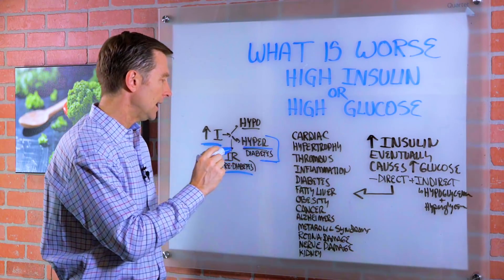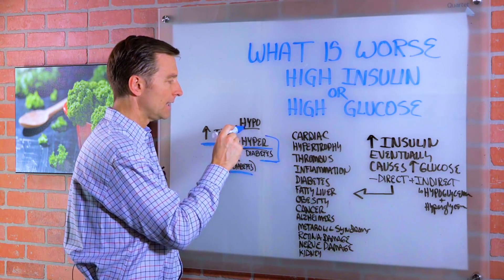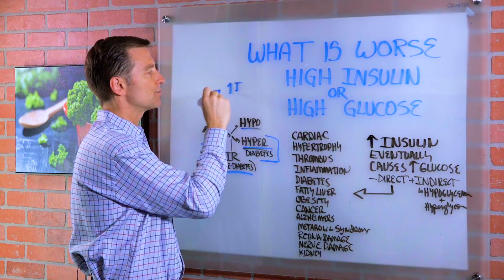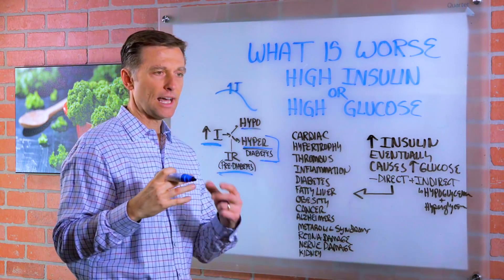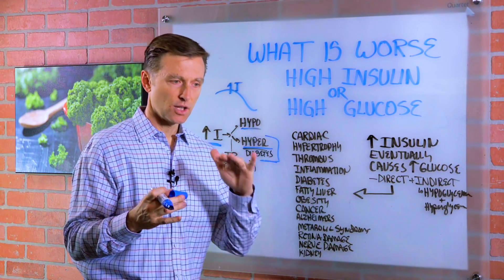But in this process right here, if their adrenals are weak, they can actually develop hypoglycemia because the high amounts of insulin is driving down the sugar. And the body doesn't have the kind of buffering, the neutralization of the low blood sugar.